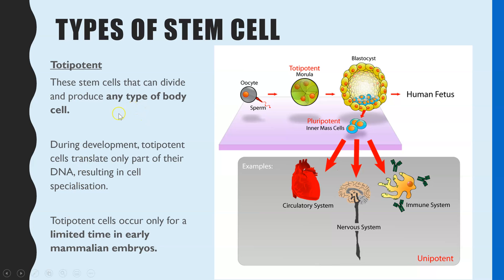Totipotent stem cells are the stem cells that can divide into any type of cell in the body. This is the type of stem cell you would find in the very early stages of an embryo, so they're only available for a very limited time. They can differentiate into any type of body cell. During development, those totipotent cells translate only one part of the DNA, and that is how they eventually become specialised.